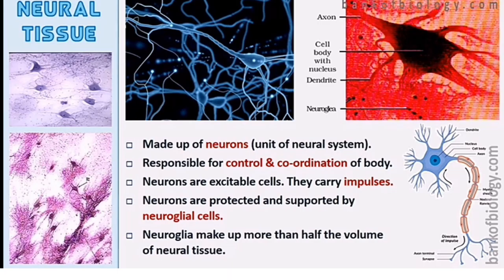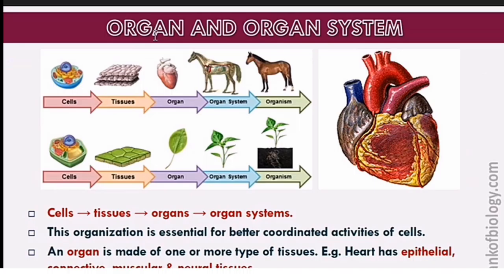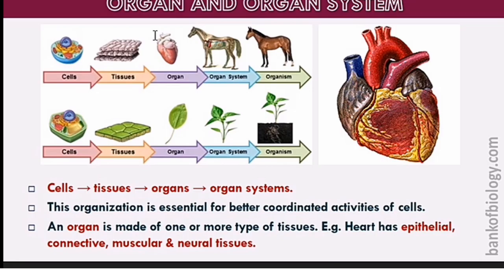Now, neural tissues. Neural tissues are found in the brain and consist of neurons. Their function is coordination and control. They are very excitable and carry impulses. Neurons are protected and supported by neuroglial cells, which provide neural tissue protection.